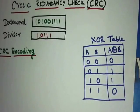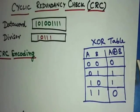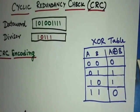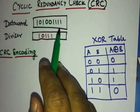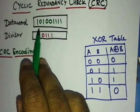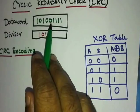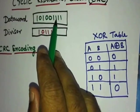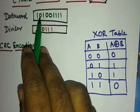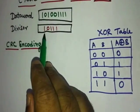Hi everyone, welcome back. In this video I am going to show you Cyclic Redundancy Check, which we call CRC. I have taken a problem where the data word is 10100111 — that is 1, 2, 3, 4, 5, 6, 7, 8, 9 bits — and we have a divisor of 5 bits.